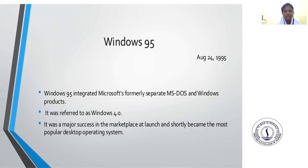Windows 95 was invented on August 24, 1995. Windows 95 integrated Microsoft's formerly separate MS-DOS and Windows products. It was referred to as Windows 4.0 and was a major success in the marketplace at launch, shortly becoming the most popular desktop operating system.